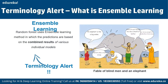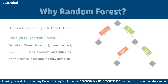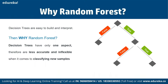Before we discuss ensemble learning, let's look at an analogy. Say we want to buy a house but are unable to decide which one to buy. We consult a few agents, and they give us a list of parameters to consider, such as price of the house, locality, number of bedrooms, parking space, and available facilities. These parameters are known as predictor variables used to find the response variable.